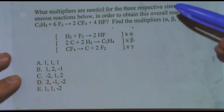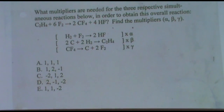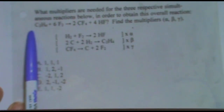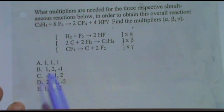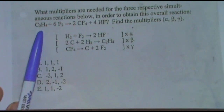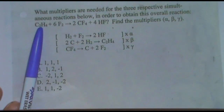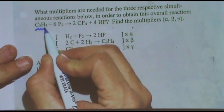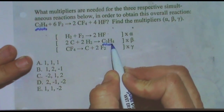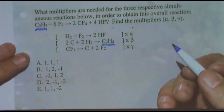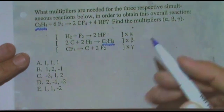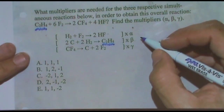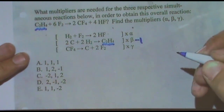My method of solving is I look for any molecule up here that appears a total of twice — once in the overall reaction and once down in the sub-reactions. Because I can't change the overall reaction, what must the multiplier beta be? Negative one.